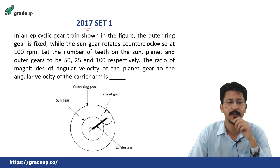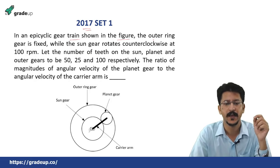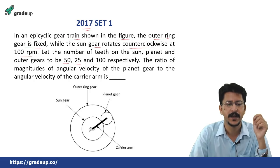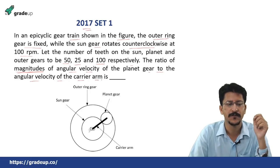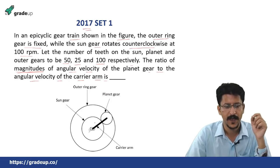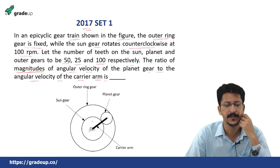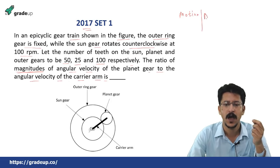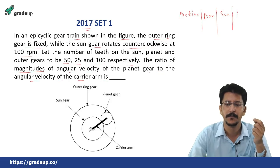2017 Set 1. In an epicyclic gear train shown in the figure, the outer ring gear is fixed while the sun gear rotates counterclockwise at 100 rpm. The number of teeth on the sun, planet and outer gears are 50, 25 and 100 respectively. The ratio of magnitudes — please note this word — of angular velocity of the planet gear to the angular velocity of the carrier arm is asked. We make our table: motion, arm, sun gear, planet gear and outer ring gear, with teeth 50, 25 and 100.